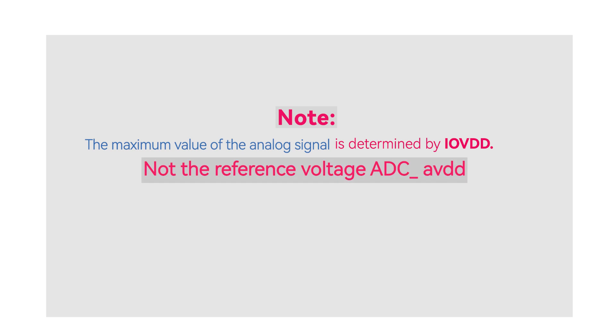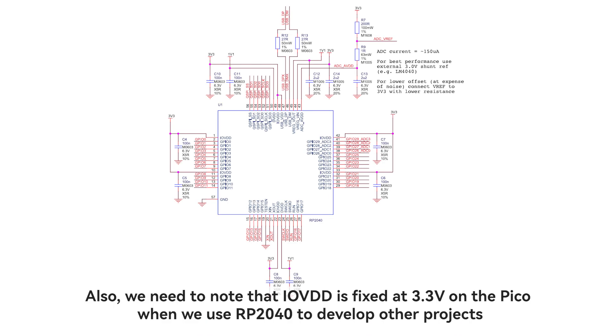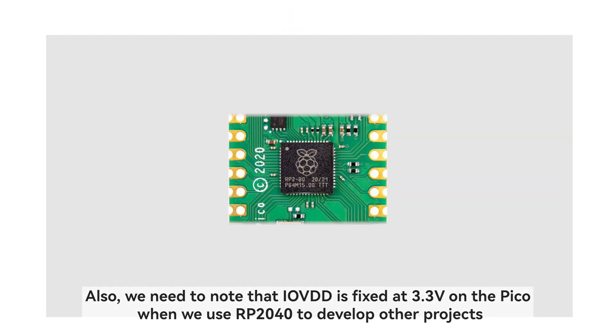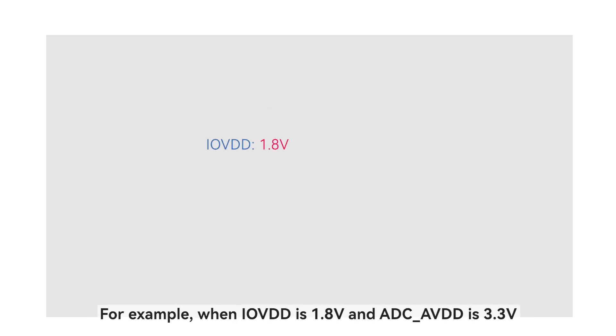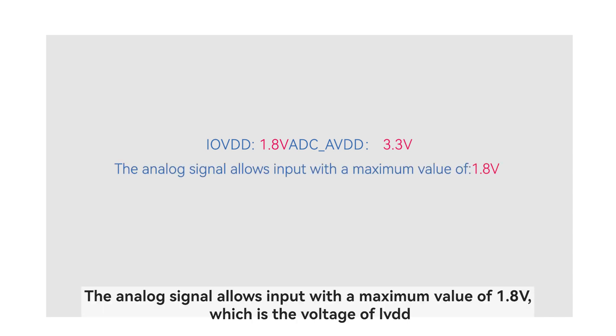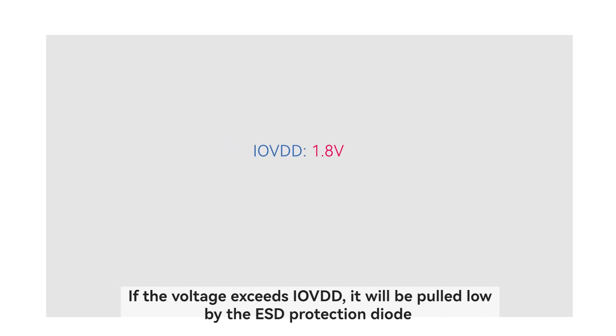It should be noted here that the maximum value of the analog signal is determined by IOVDD, the IO port power supply, not the reference voltage ADC_VREF. Also, we need to note that IOVDD is fixed at 3.3V on the PICO. When we use RP2040 to develop other projects, for example, when IOVDD is 1.8V and ADC_AVDD is 3.3V, the analog signal allows input with a maximum value of 1.8V, which is the voltage of IOVDD. If the voltage exceeds IOVDD, it will be pulled low by the ESD protection diode.